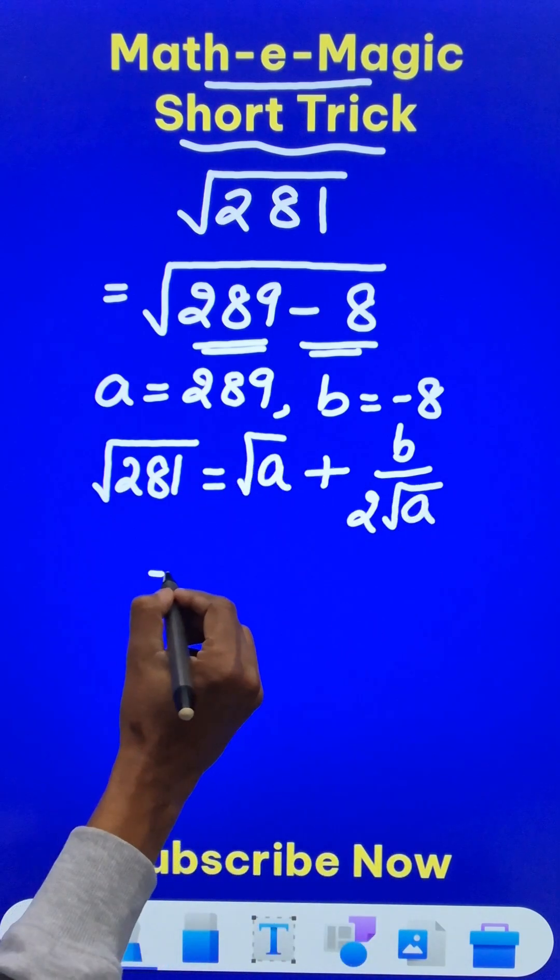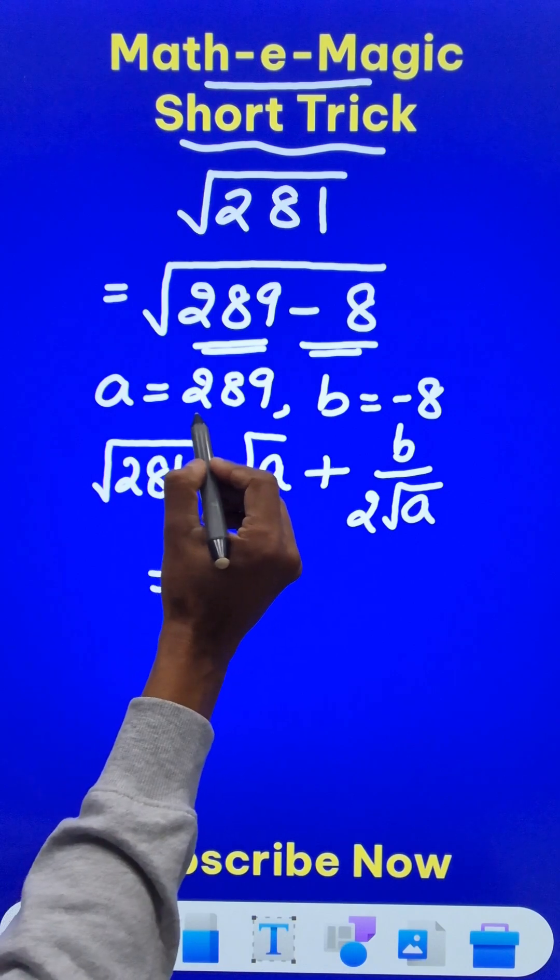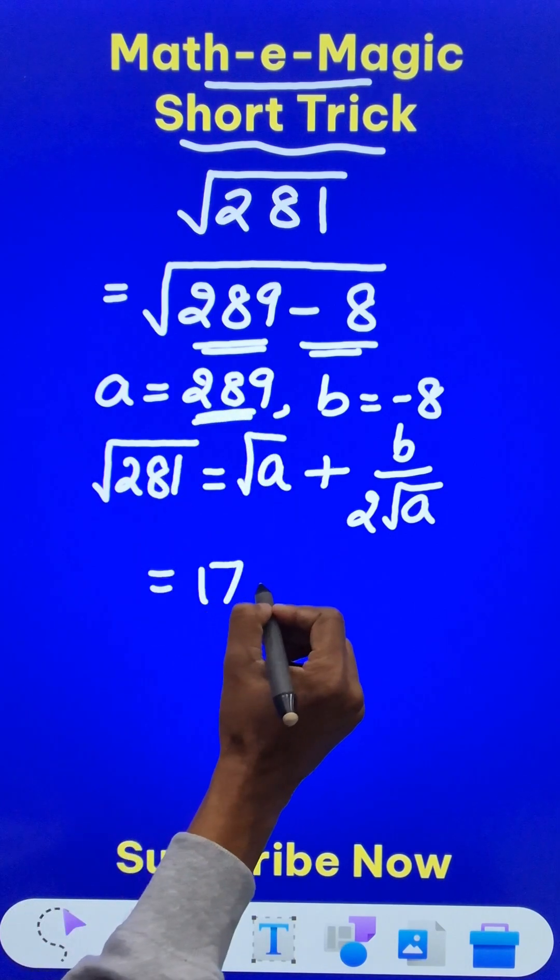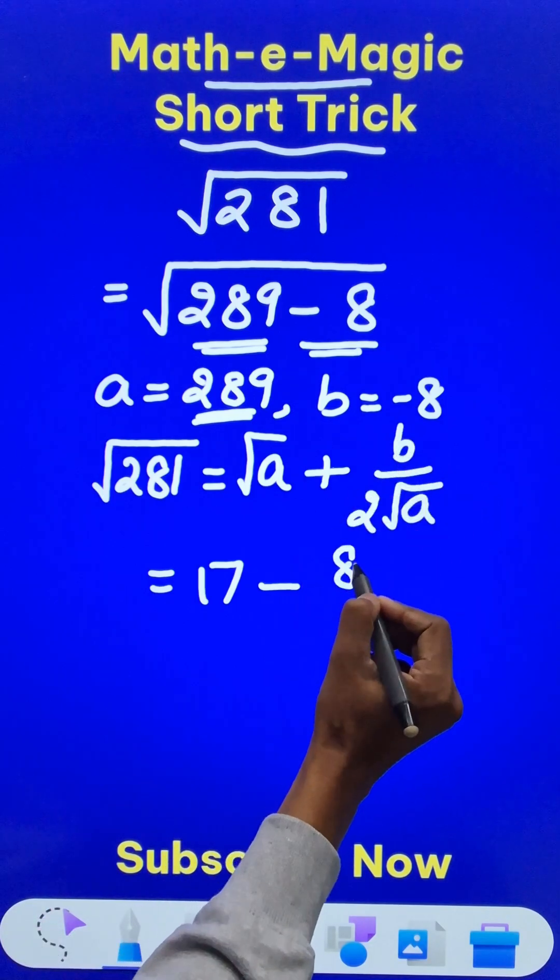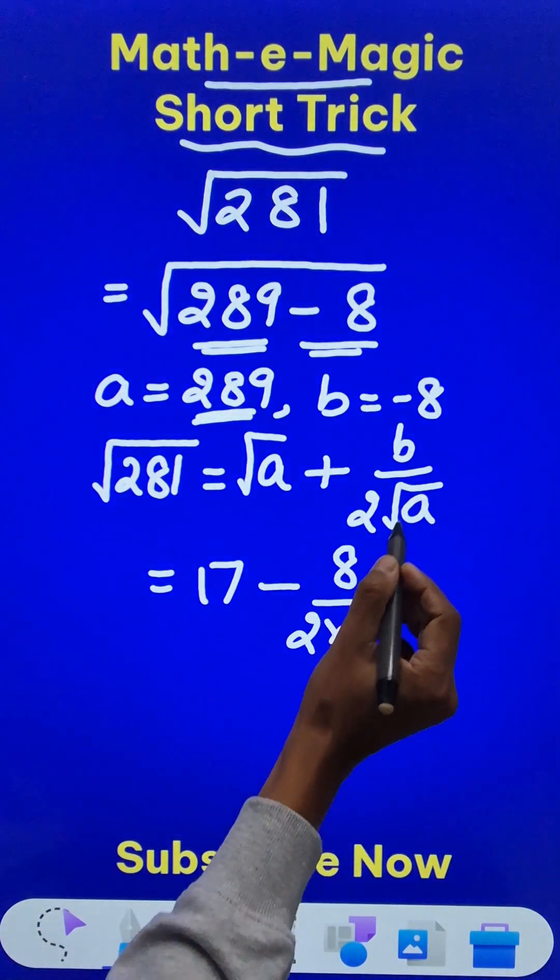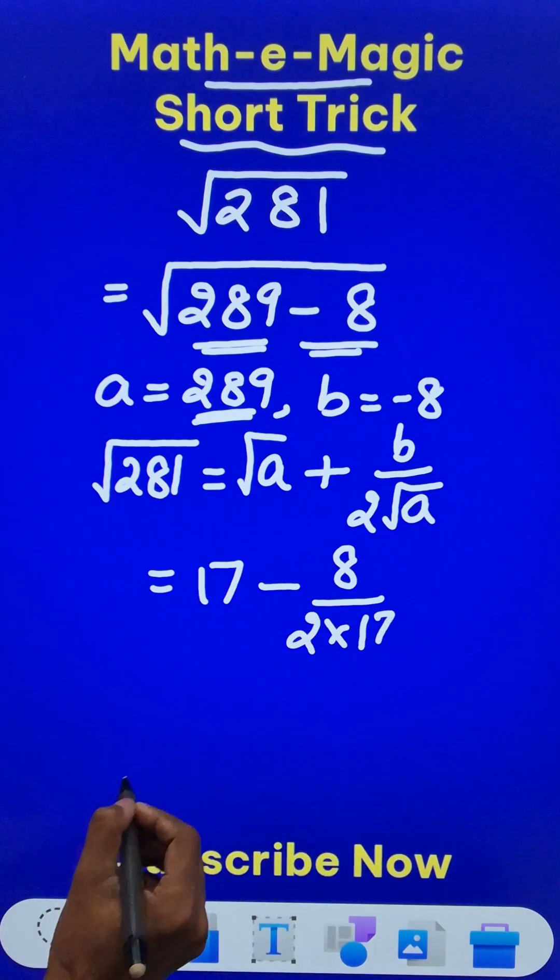Now let's see how this eliminates the use of long division. Square root of a means square root of 289, which is 17, and b is negative here so plus becomes minus, and b is 8 upon twice of square root of a. Just like here we wrote 17, we have to write 17 here again.